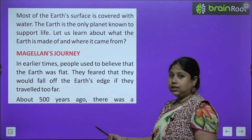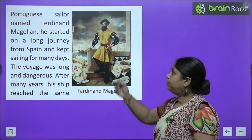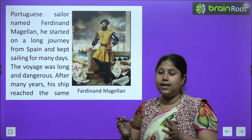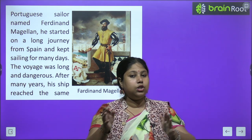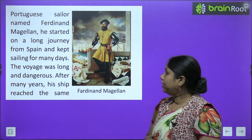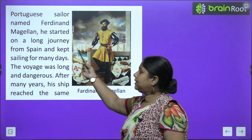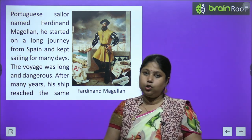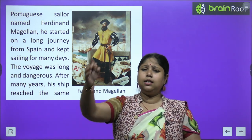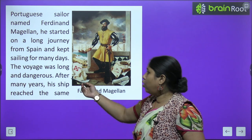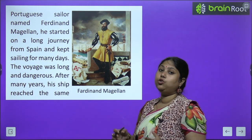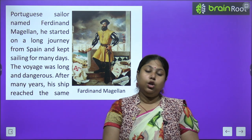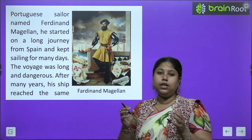About 500 years ago — yaani 500 saal pehle — there was a Portuguese sailor named Ferdinand Magellan. This is the picture of Ferdinand Magellan. Ek Portuguese sailor the, wo sail karte the, wo doosri doosri jagahon pe naav ke through jaate the, apni ship leke jaate the. So Ferdinand Magellan, he started a long journey from Spain and kept sailing for many days — unhone Spain se apni journey shuru ki aur kai dinon tak yatra karte rahe. The voyage was long and dangerous — voyage ka matlab journey on water. Jab hum paani ke raaste se kisi lambi yatra pe nikaltey hain, usse hum voyage bolte hain — toh ye jo yatra woh kar rahe the, ye kaafi lambi aur kaafi khatarnaak thi.